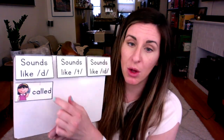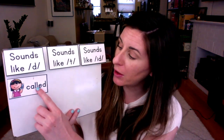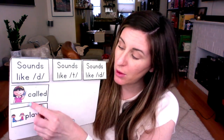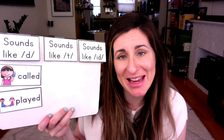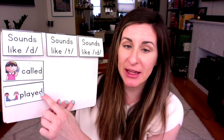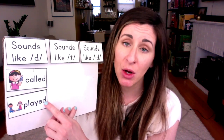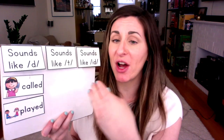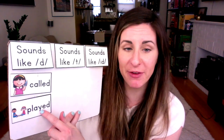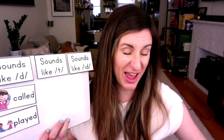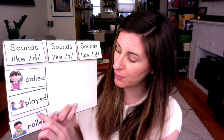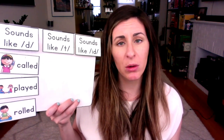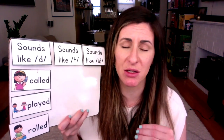So we have a word like 'called.' The word 'call' is there and then we add E-D and it just says D at the end. The word 'played' is the same way — 'played' has 'play,' then we add E-D and we just say D at the end. Notice that we didn't change the spelling of the root word — we just added E-D. We didn't change the spelling of 'play,' we just added E-D. Another one is 'rolled' — we didn't change the spelling of 'roll,' we just added E-D and the E-D says D at the end.